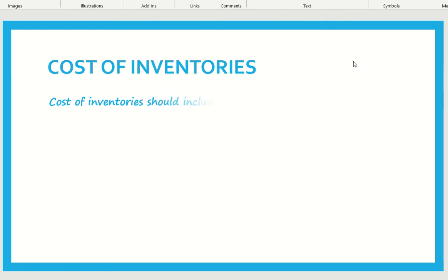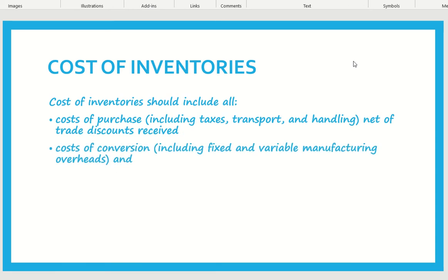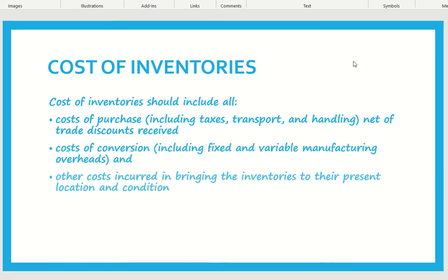Cost of inventories include the purchase price of the inventory — the bought value of the inventory including taxes, transportation, handling, or any other costs related to the buying transaction of the inventory, less any kind of trade discount received at the time of purchase.